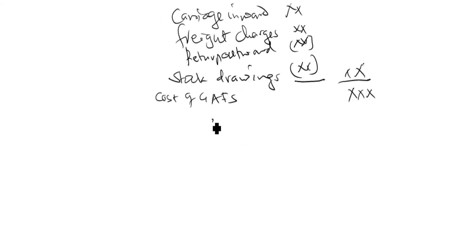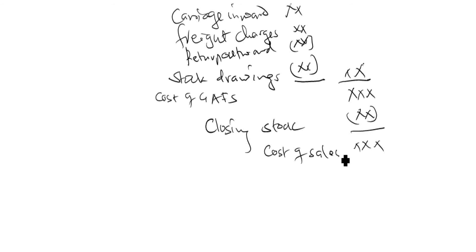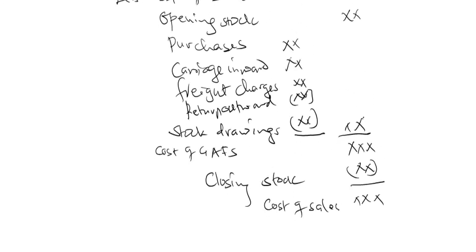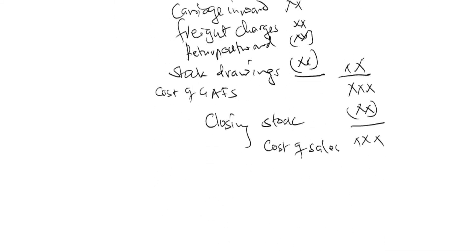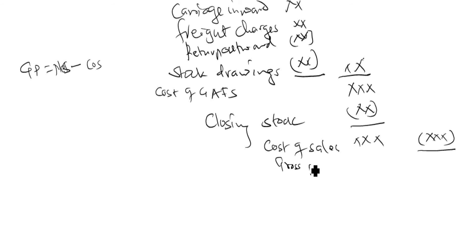To get the cost of goods available for sale, we need to adjust it with the closing stock — so we subtract the closing stock from the cost of goods available for sale. The amount you get is also called the cost of sales. Then to get the gross profit, you subtract the cost of sales from the net sales. Gross profit equals net sales less cost of sales, and what you get here is the gross profit.